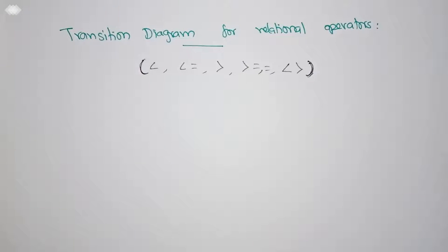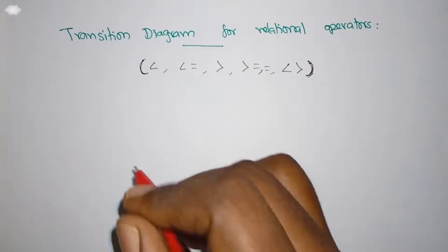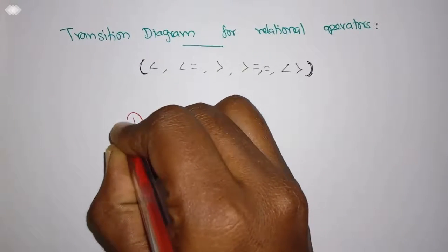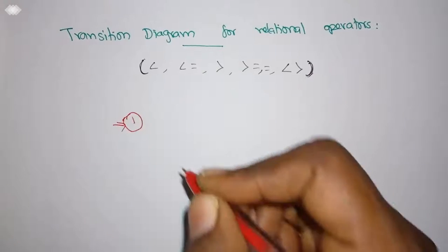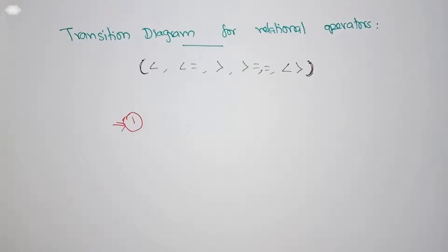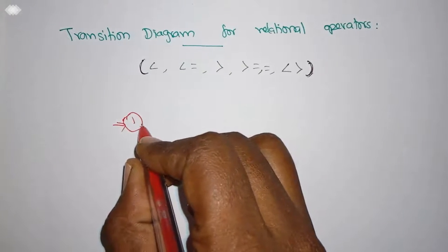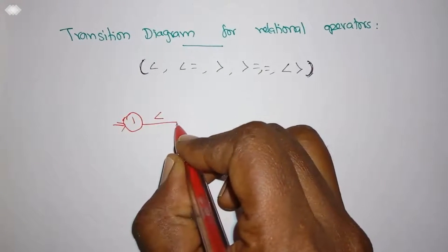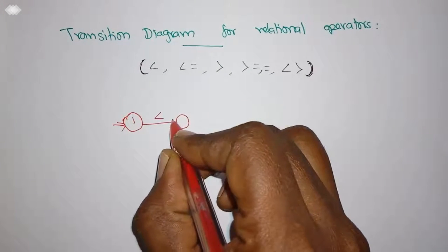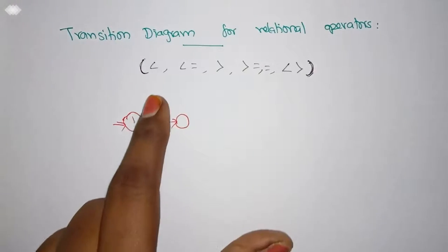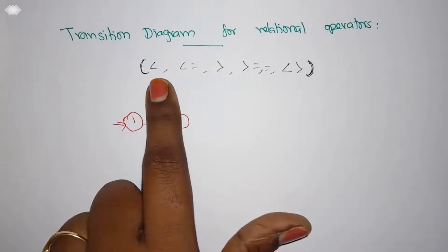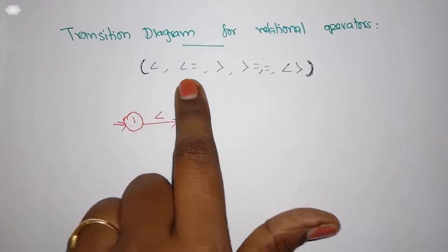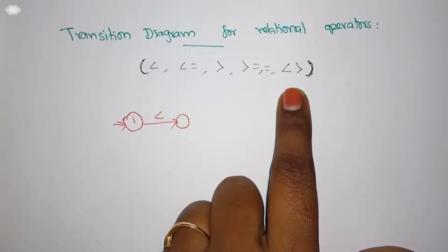Whenever you want to draw a transition diagram that recognizes these relational operators, it starts from the starting state. It starts from the starting state. If the first element is less than, there are three possibilities: you have less than, less than or equal to, and the not-equal-to case.